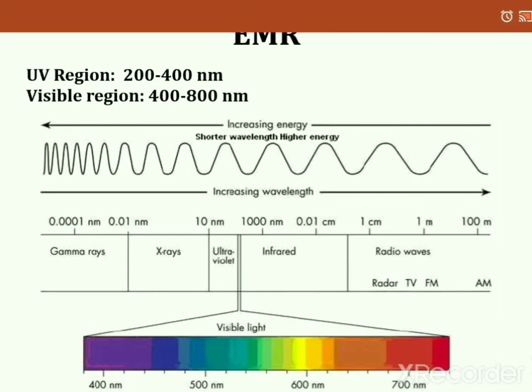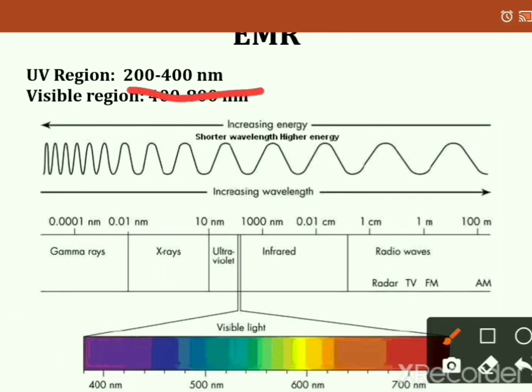The ultraviolet region spans 200 to 400 nm, while visible radiation spans 400 to 800 nm. Visible light is further subdivided: 400 nm corresponds to purple, 500 nm to the green-blue range, 600 nm to yellow, and 700 nm to red.